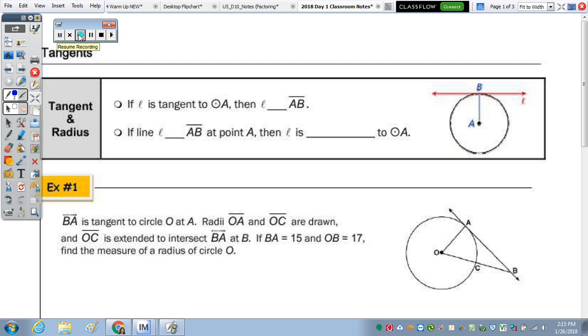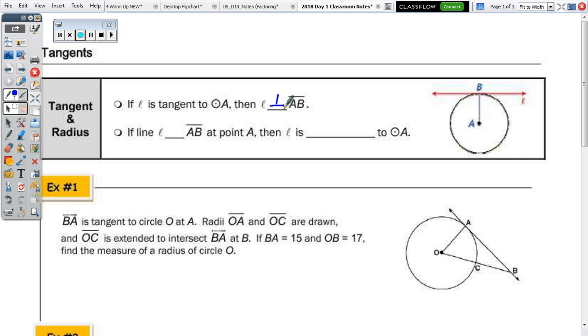So, the first bullet: if line L is tangent to circle A, then line L is perpendicular. Okay, so let's put in our 90 degree angles.